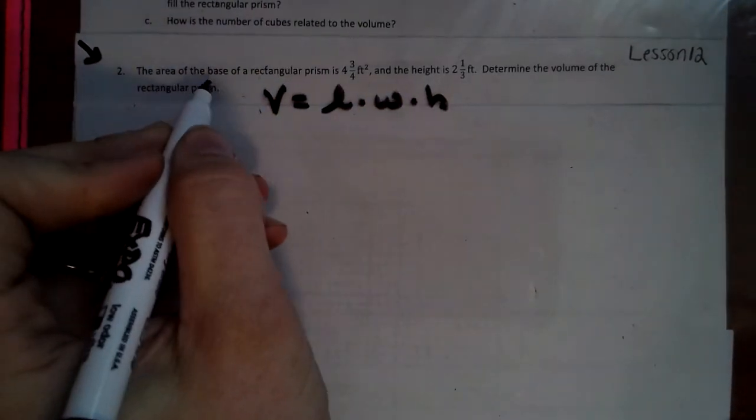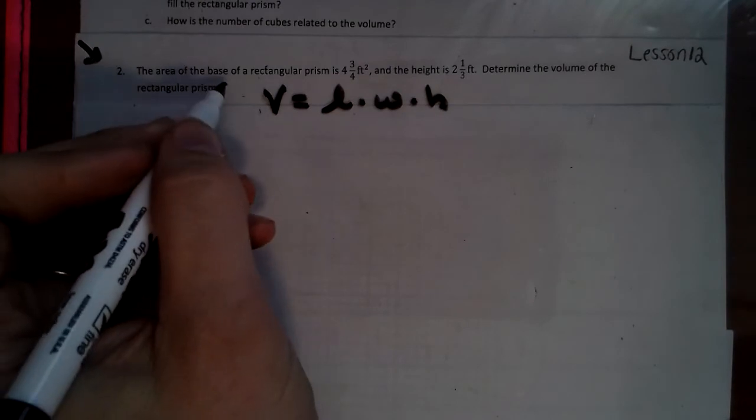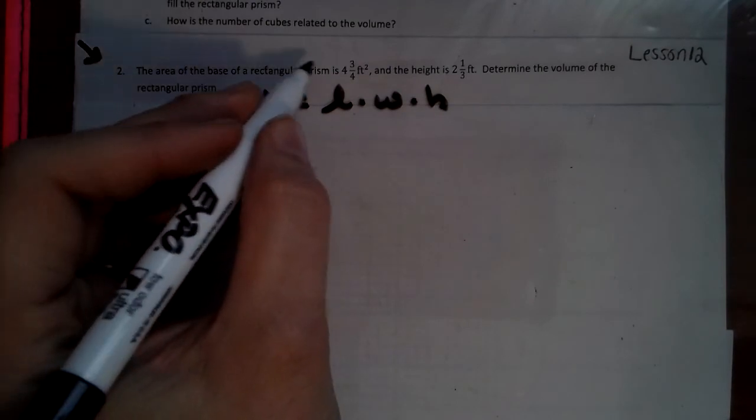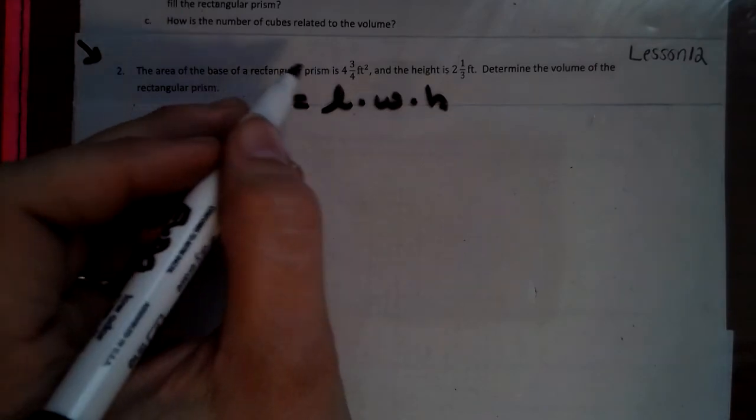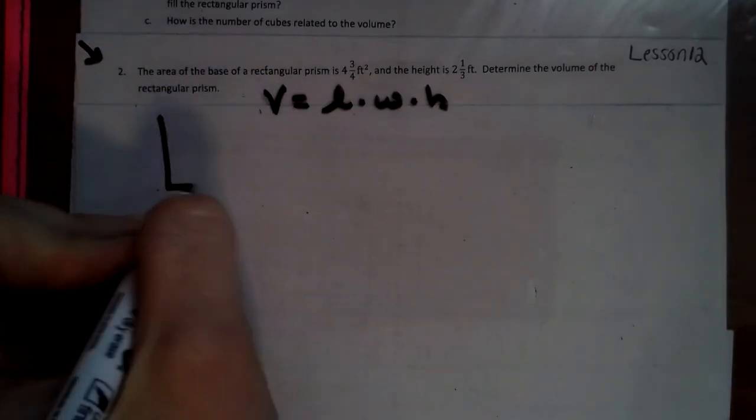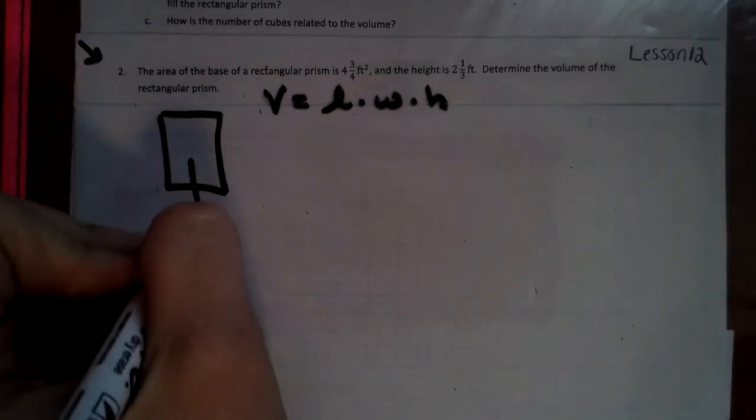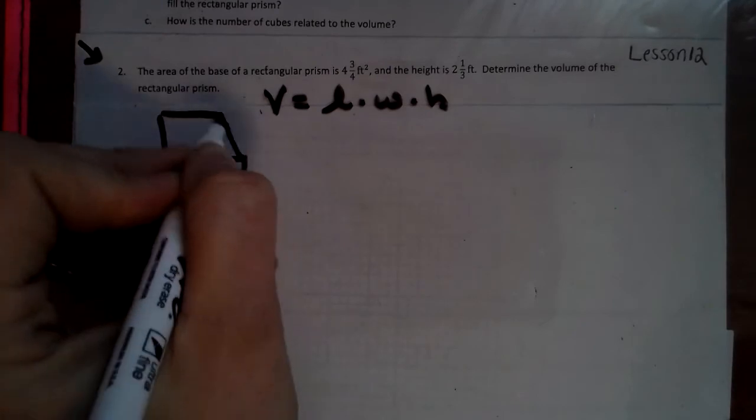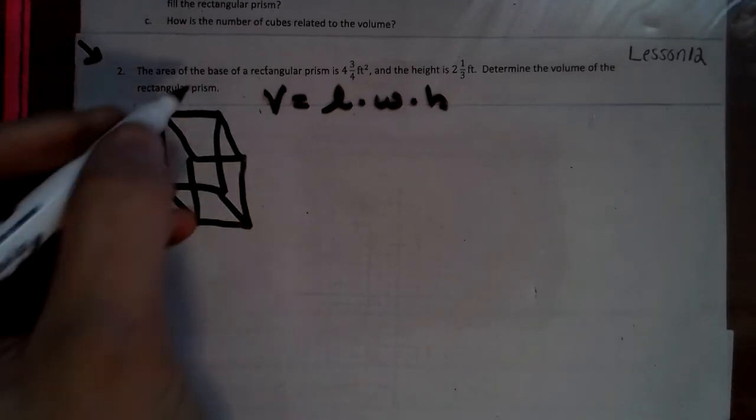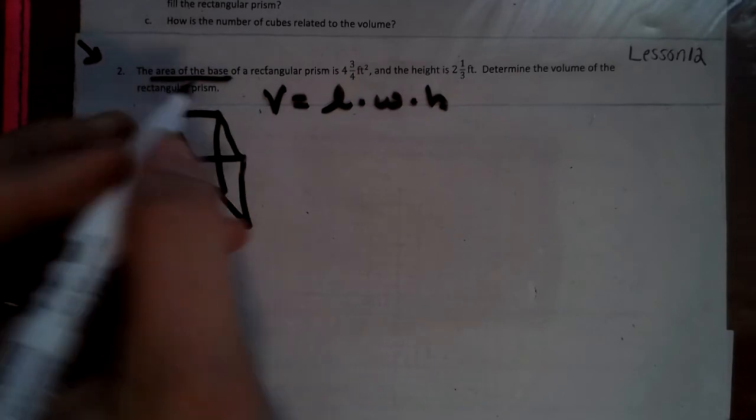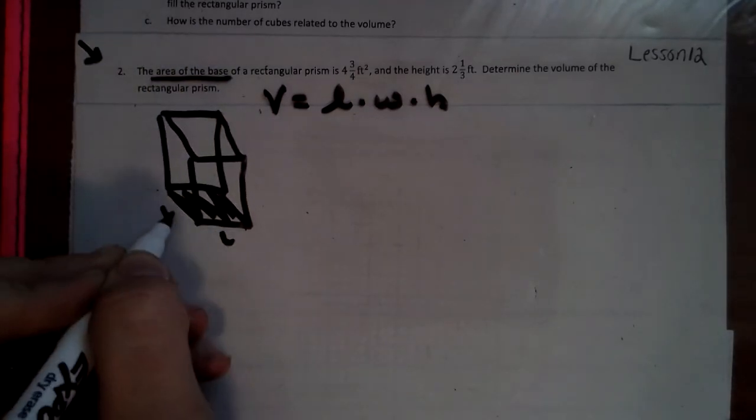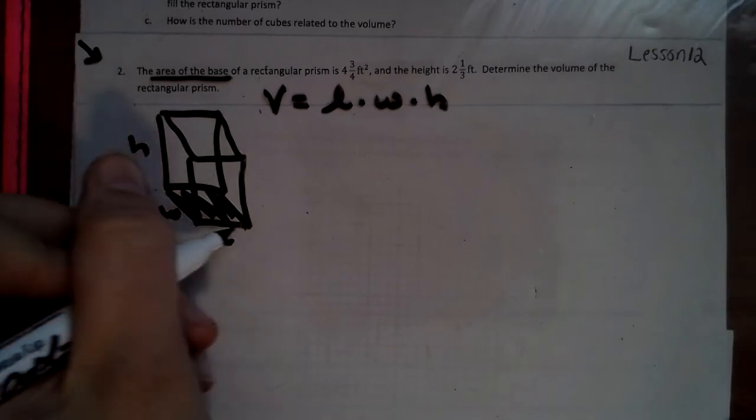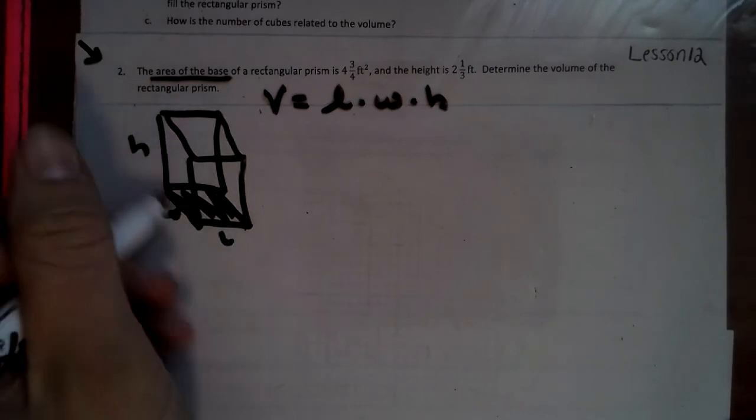It says the area of the base of the rectangular prism is this. So that's the area of the base. So if we look at a rectangular prism, what that means, the area of the base of it means this whole thing. So they just told me the length, the width, and there's the height. So they just told me the answer to the length times the width.